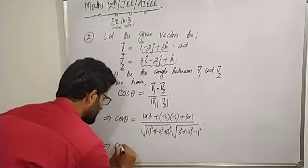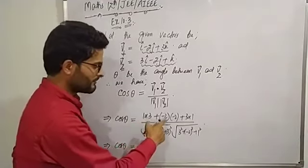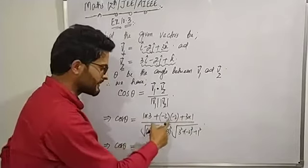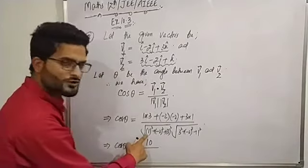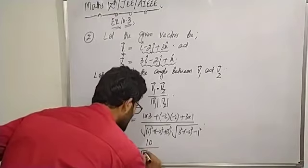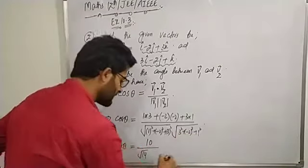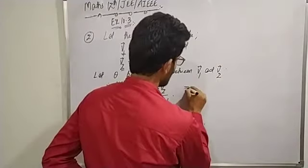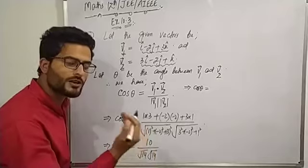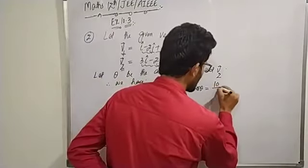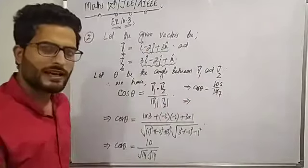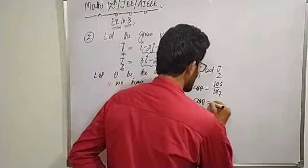Computing: numerator = 3 + 4 + 3 = 10. Denominator: √(1 + 4 + 9) = √14 and √(9 + 4 + 1) = √14. So cos θ = 10 / (√14 × √14) = 10/14 = 5/7.